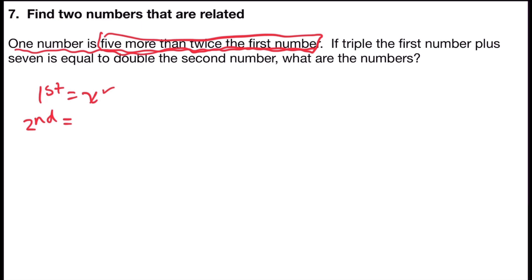So the other number, I'm going to have addition because it's more than. Twice the first number means two times that number. So that will be 2x plus five.